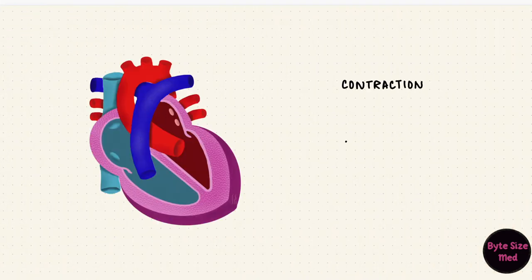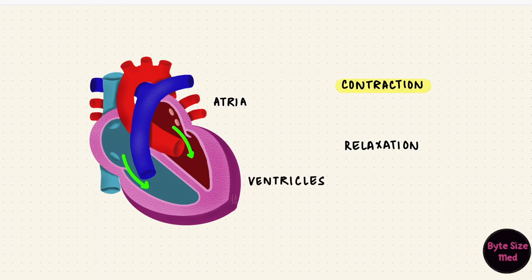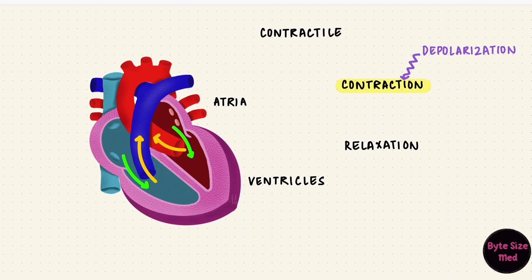The heart contracts and relaxes. The contraction is how it actively moves blood. Atrial contraction pushes blood into the ventricles, and ventricular contraction pumps blood into the pulmonary trunk and the aorta. The contraction occurs because those cells depolarize — these are contractile cells.